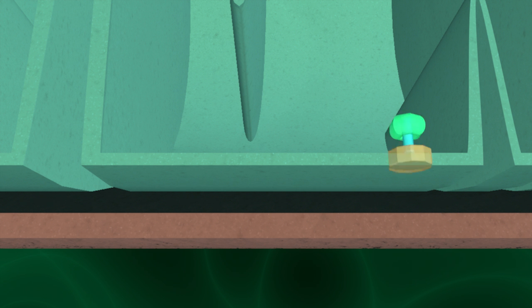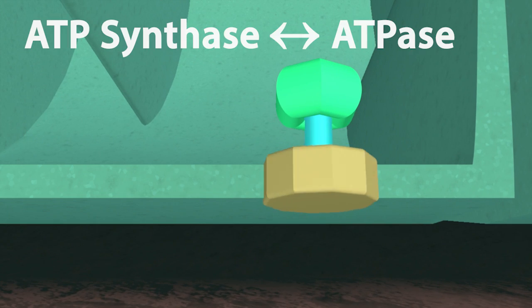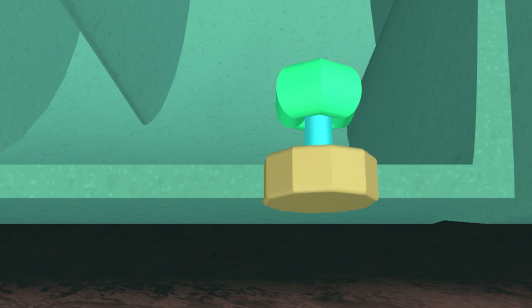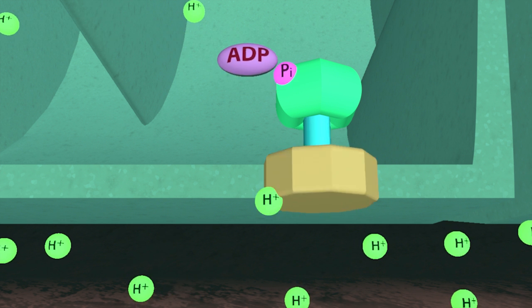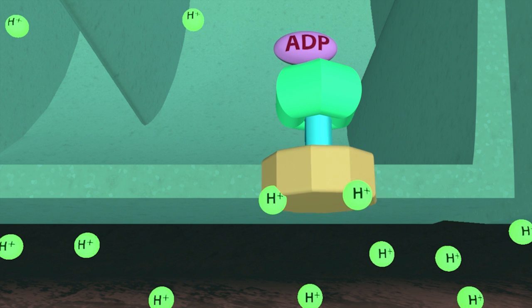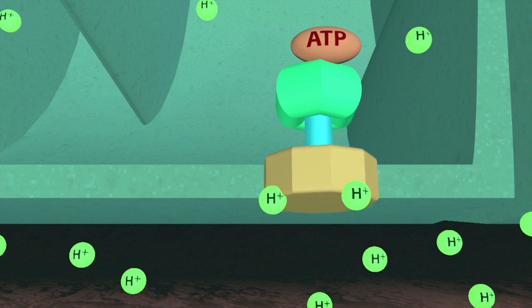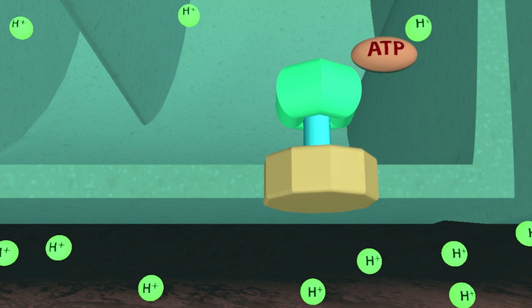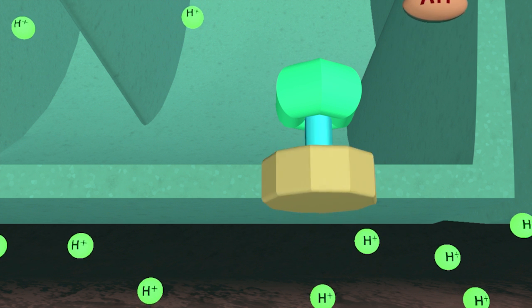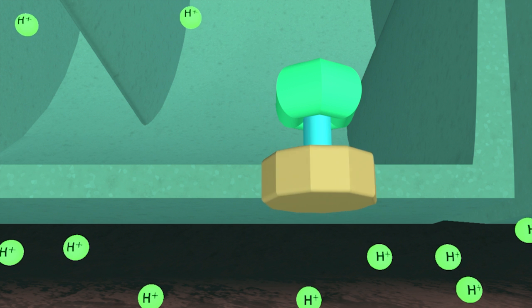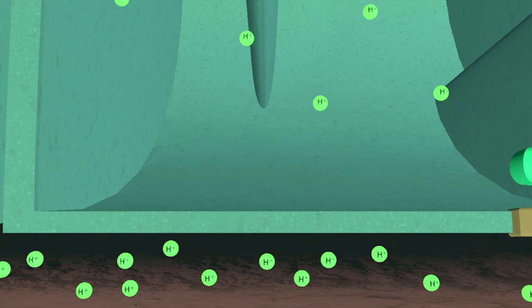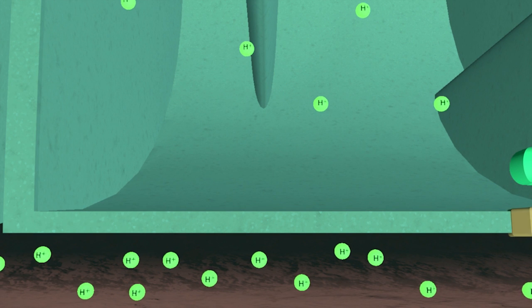ATP is generated within the matrix by an enzyme called ATP synthase, or just ATPase. ATP synthase is powered by the movement of hydrogen ions from the intermediate space into the matrix. This concentration gradient is established by four enzymes located in the inner membrane.